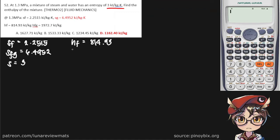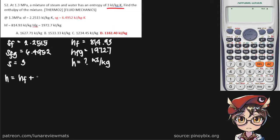Down here we're given our Hf and our Hfg, and we're asked to find the enthalpy at this state in kilojoules per kilogram. To find our enthalpy we can simply use the equation H = Hf + x·Hfg. We're already given our Hfg, so we just need to find our quality of steam.